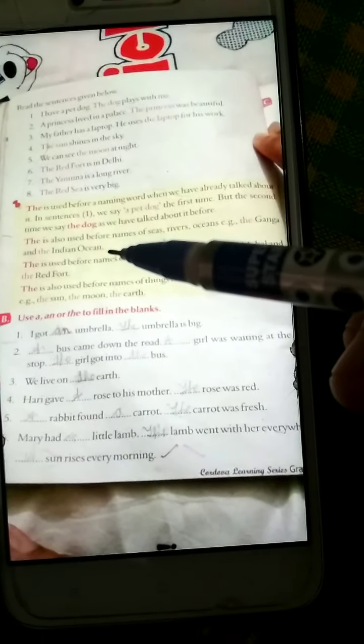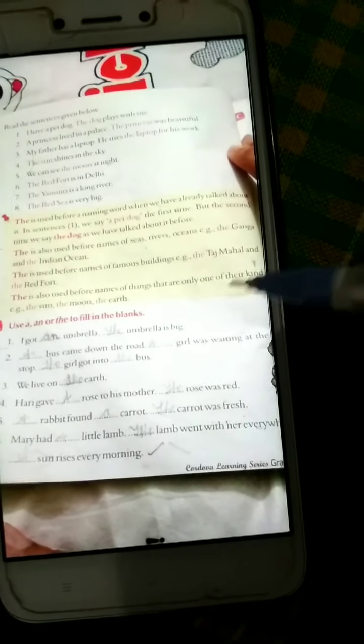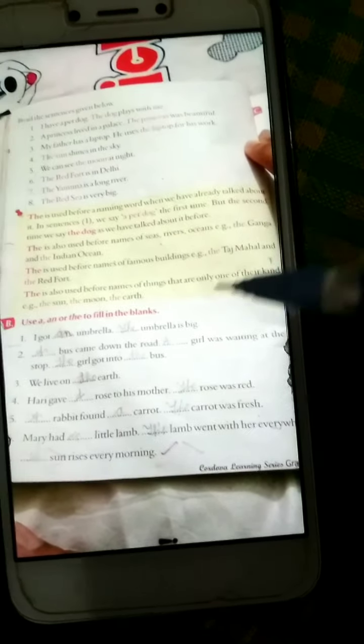Next, 'the' is used before names of seas, rivers, oceans. Like river ka name aata hai like Ganga, Yamuna, Saraswati. Koi ocean hai like Indian Ocean, inse pehle 'the' aayega.